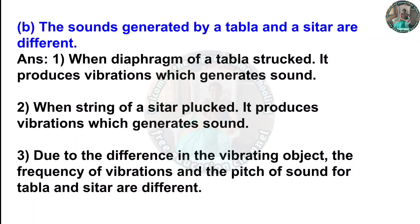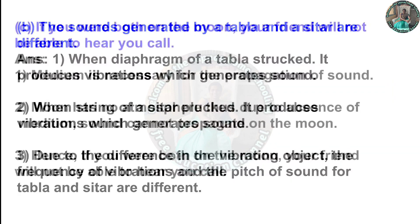(b) The sounds generated by a tabla and sitar are different. Answer: When the diaphragm of a tabla is struck, it produces vibrations which generate sound. When the string of a sitar is plucked, it produces vibrations which generate sound. Due to the difference in the vibrating object, the frequency of vibrations and the pitch of sound for tabla and sitar are different.